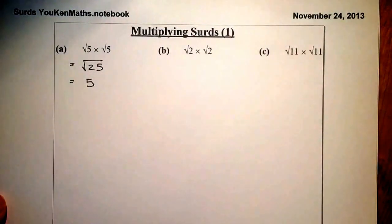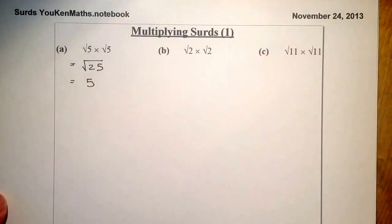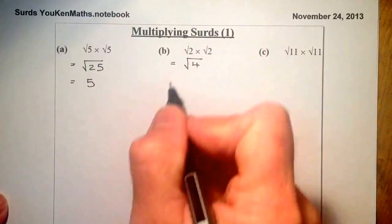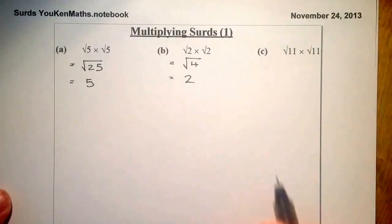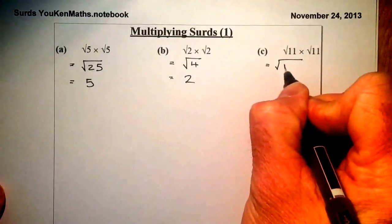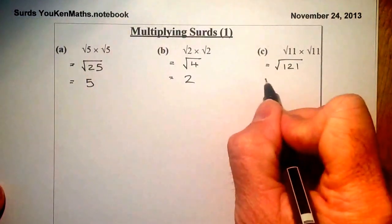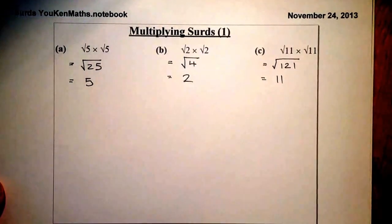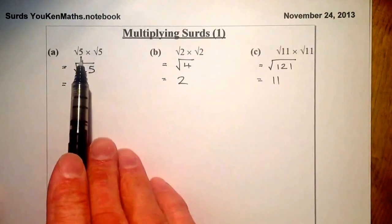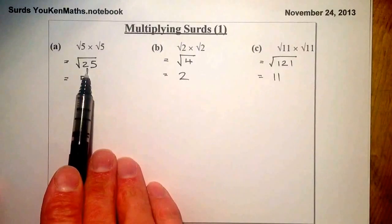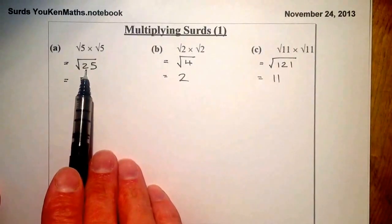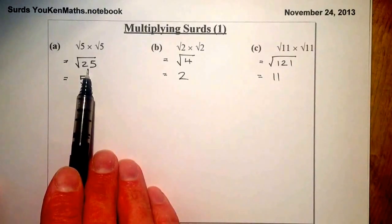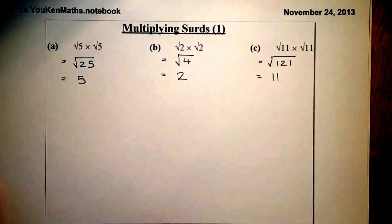You can freeze the video and try the questions as we go along. Root 2 times root 2 gives me root 4, and that gives me an answer of 2. Root 11 times root 11 gives me the square root of 121 — that's 11 times 11 — and the square root of 121 is 11. So we can multiply two surds together and get a different surd, then simplify it if it's a square number, or simplify the surd down like we did in the previous videos.